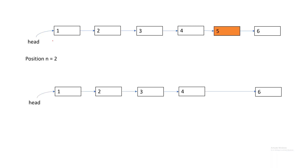How can we solve this problem? We are given a linked list with nodes 1, 2, 3, 4, 5, 6, and the position is 2. We have to delete the second node from the end. In a singly linked list, to delete that node, you first have to reach the node just before it.